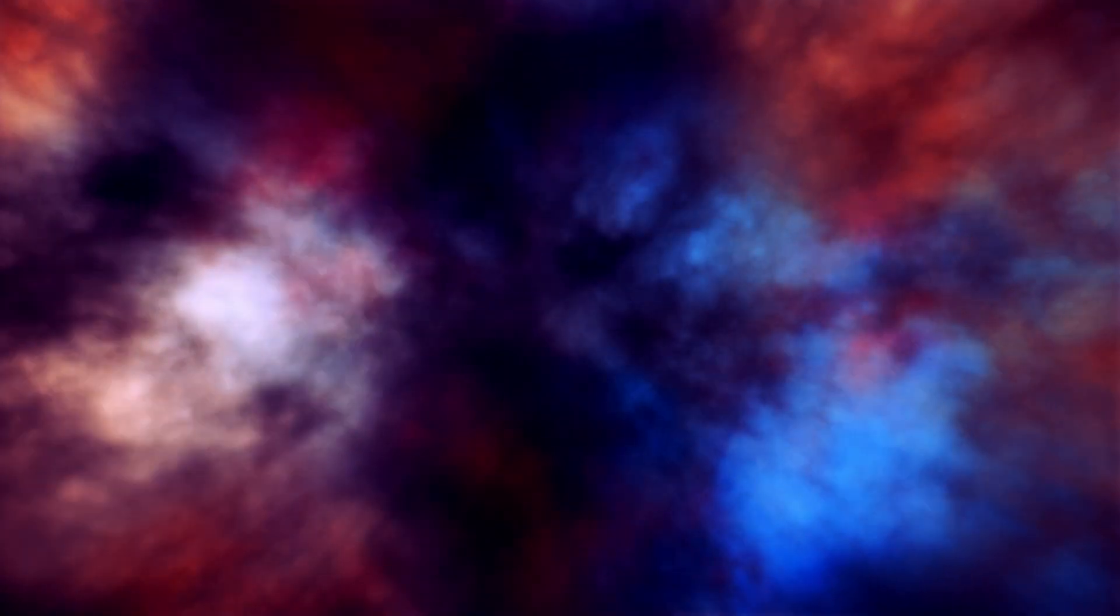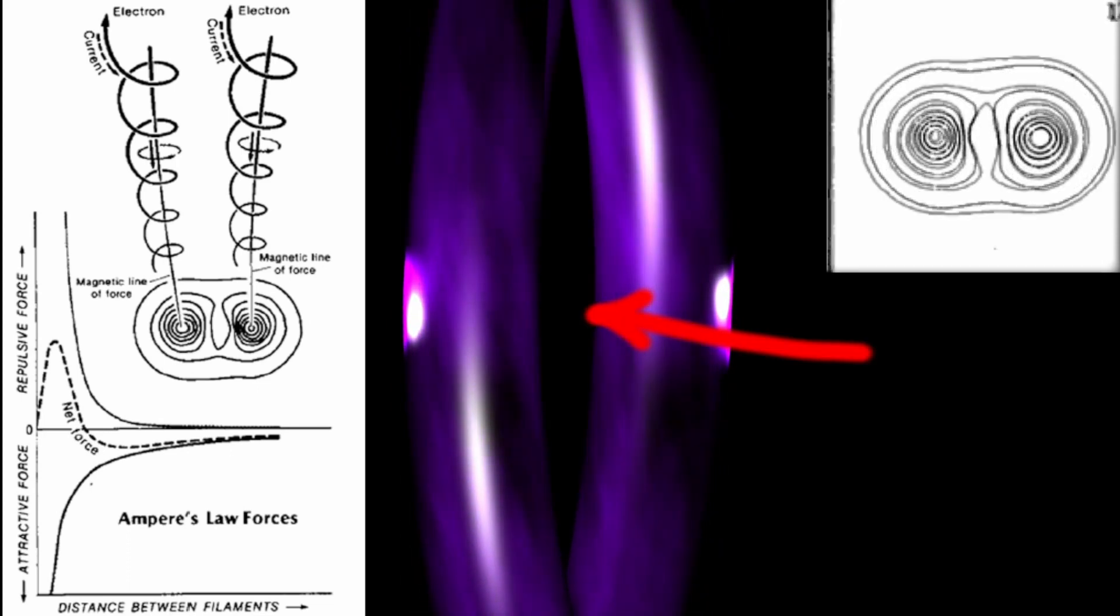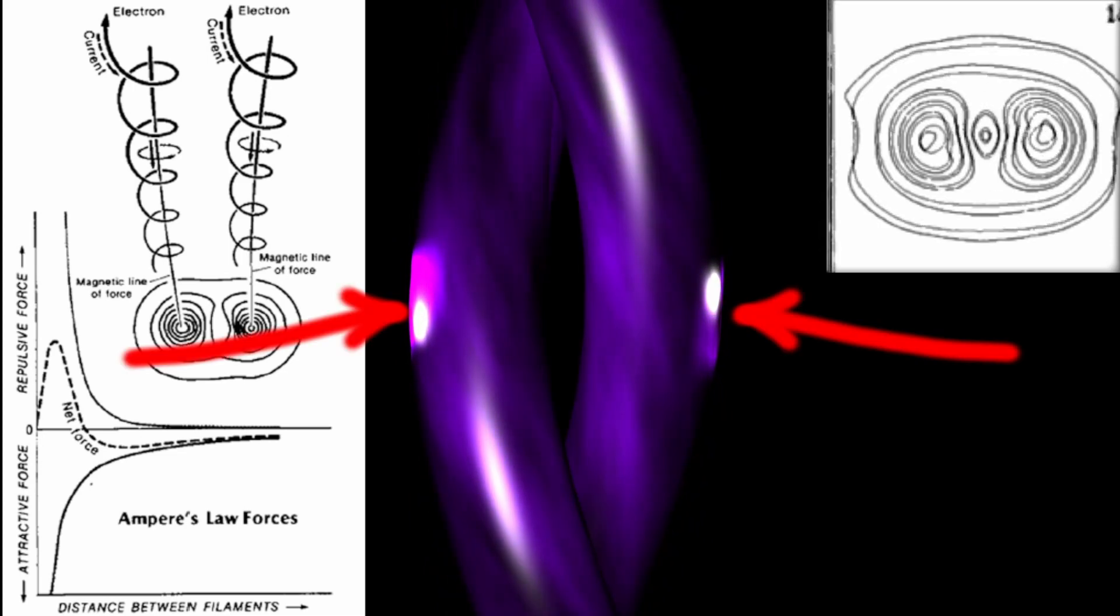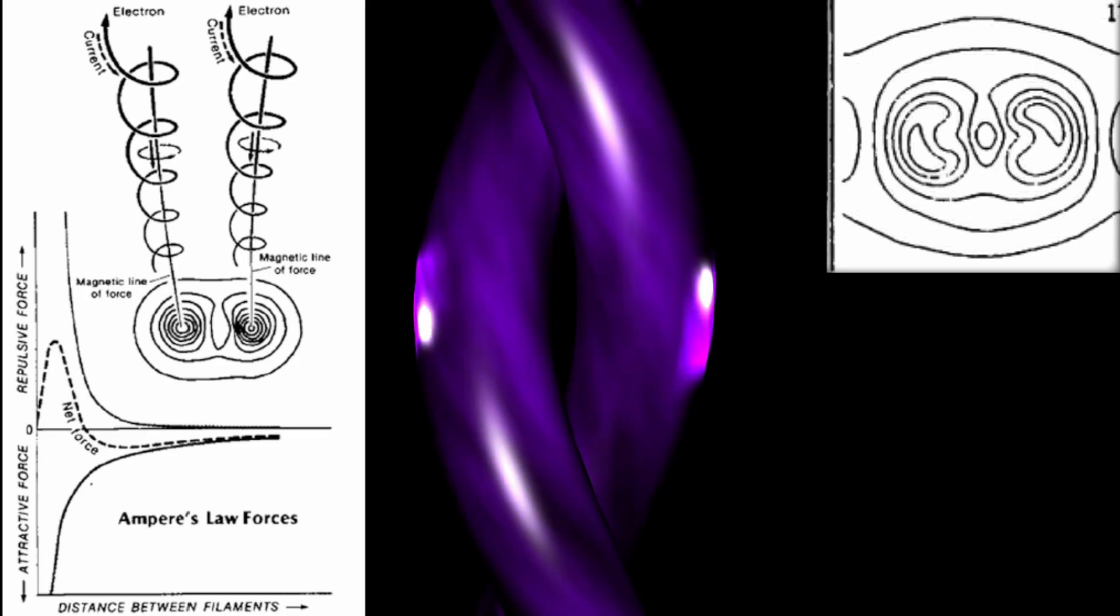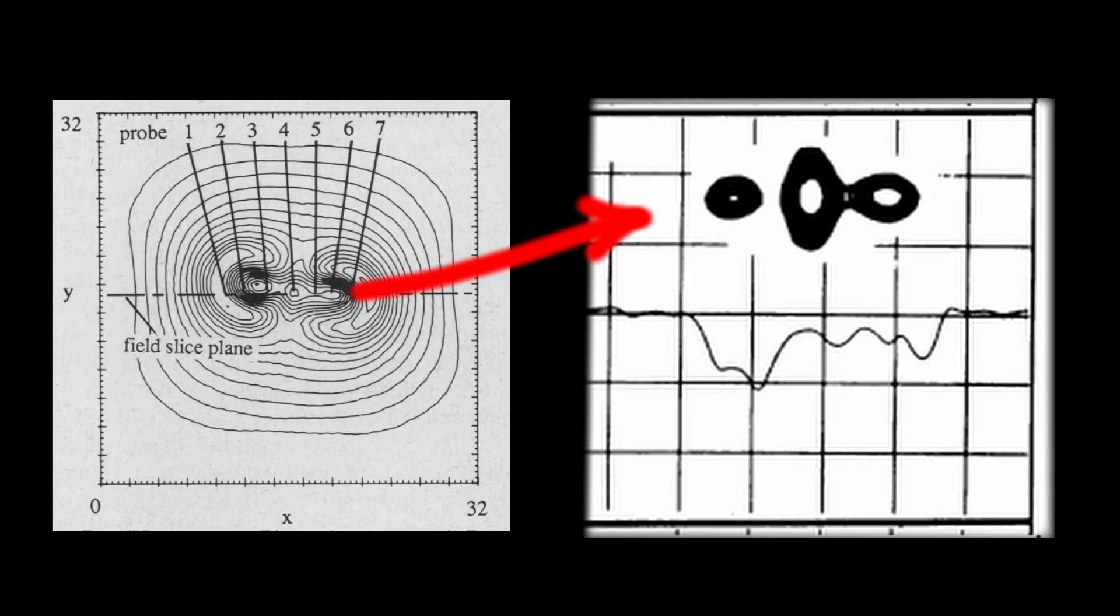Let's just take a step back here. Anthony Peratt's concept of galaxy formation involved two Birkeland currents twisting around each other and at a certain point a double layer formed. Material between the filaments would then be compressed into the AGN. The outer edge of each filament would also become excited, causing it to light up forming what appeared as lobes.